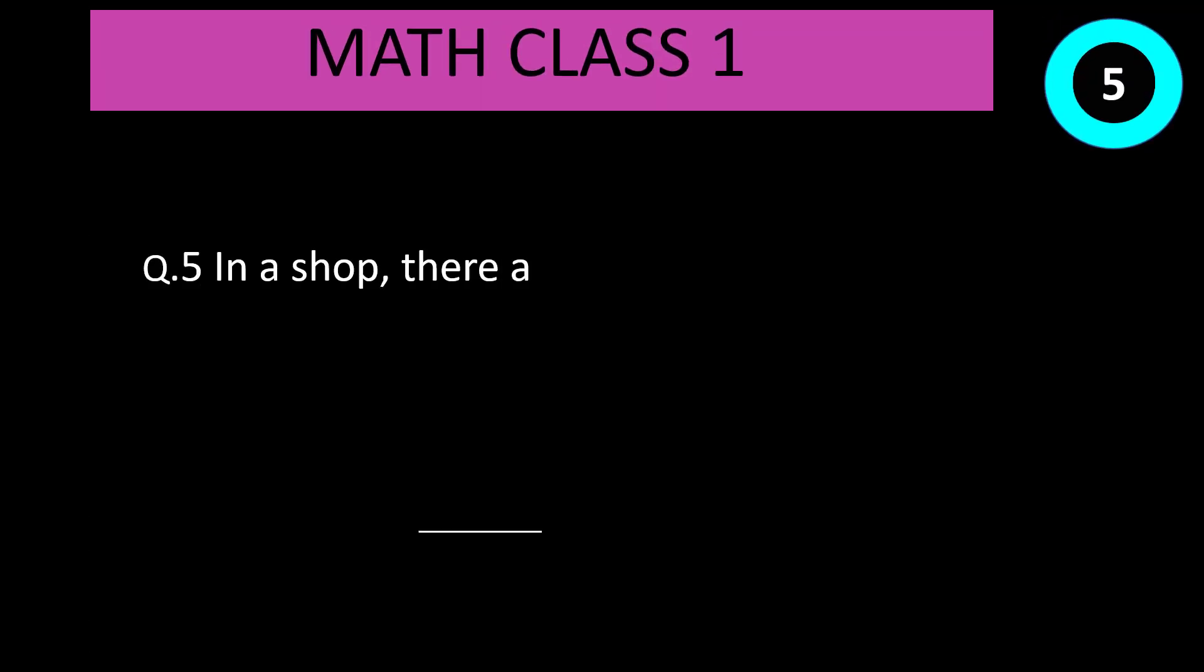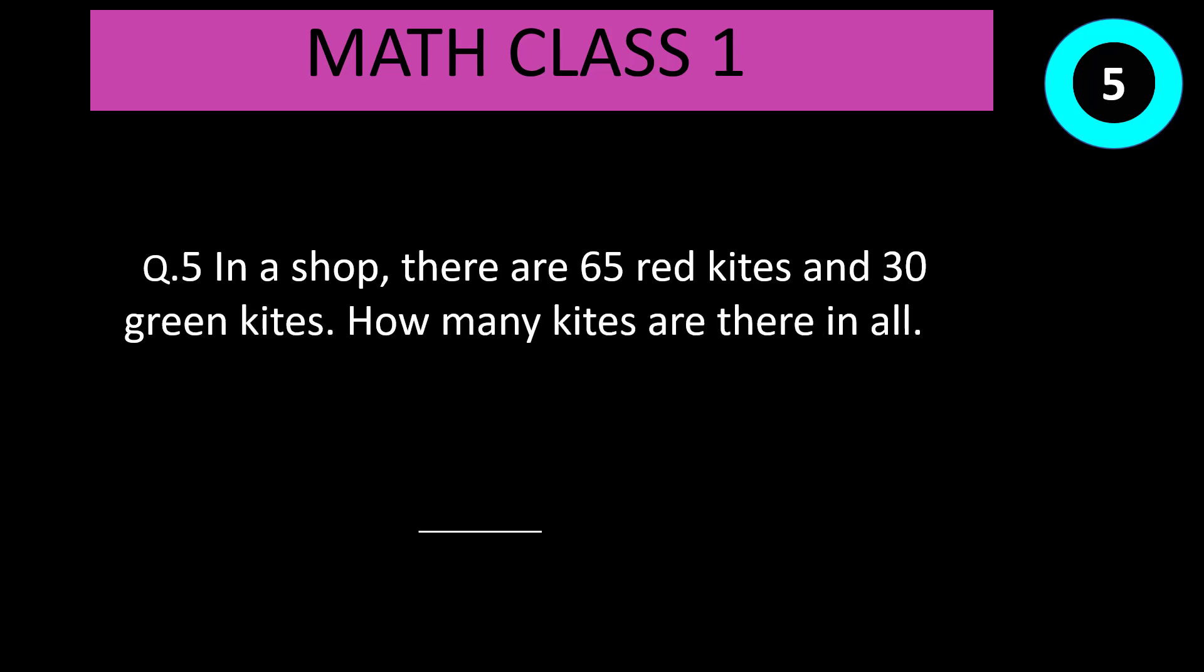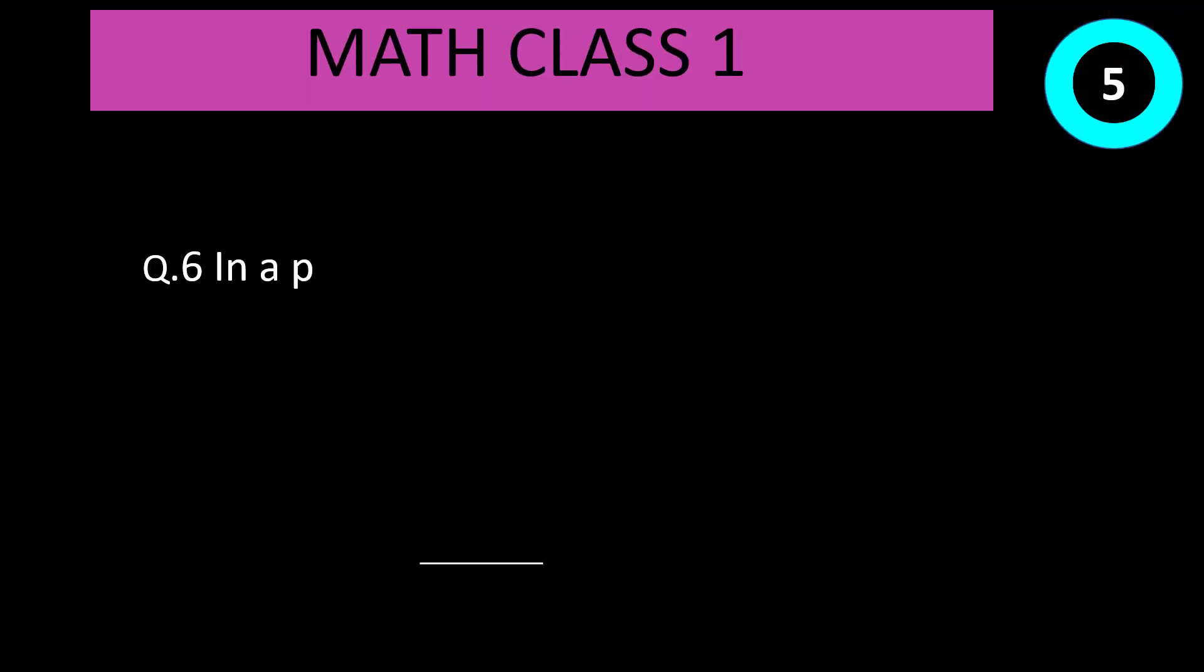Question number 5: In a shop, there are 65 red kites and 30 green kites. How many kites are there in all? Time start now. Correct answer is 65 plus 30 equal to 95.